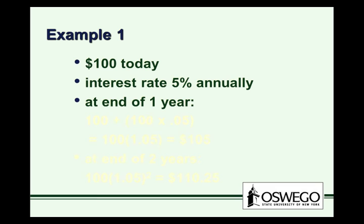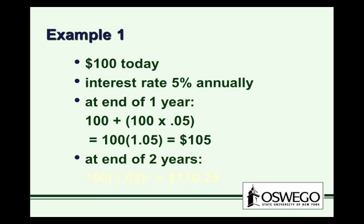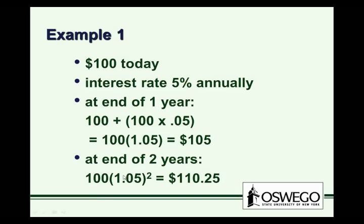And at the end of one year, at 5% annually, $100 plus the interest earned on the $100, of course, will give us $105. Very simple. And if we go forward, at the end of two years, well that $105 gets subject to 5% again in the second year, and we get a total of a little over $110.